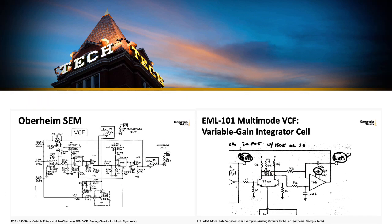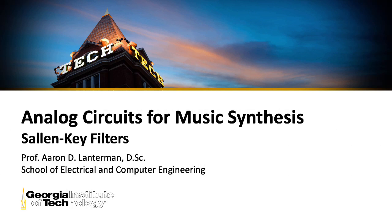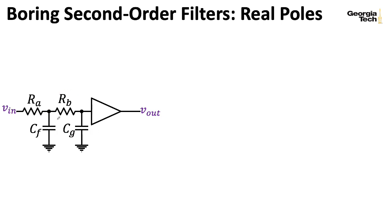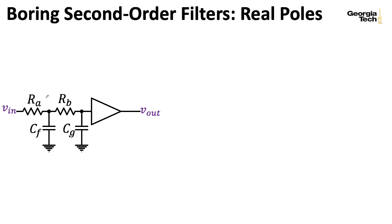In the last couple of lectures, we've looked at state variable filters as a way to implement second-order filters. Here we're going to look at another structure called the Sallen-Key as another method of implementing second-order filters. So here's an extremely boring second-order filter. I do have two capacitors, so that will give me two poles. It takes a bit of work to derive the transfer function for this filter and figure out where the poles are.